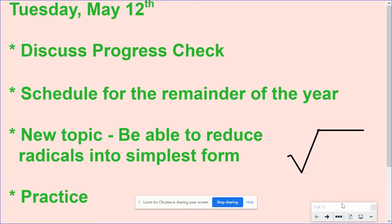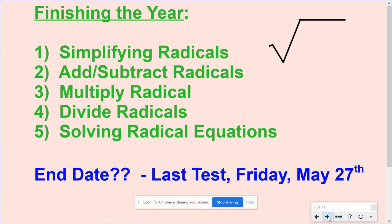Hello everybody. Today is Tuesday and yesterday you took a progress check on application problems and using factoring to solve. What we're going to do today is start our last unit for the year. We're going to finish the year with radicals — simplify radicals, add and subtract them, multiply, divide, and then finally solve radical equations. This should take us to the end of May. Your last day will be when you take the test on Friday, May 27th. If you get behind, you'll have another week to finish.